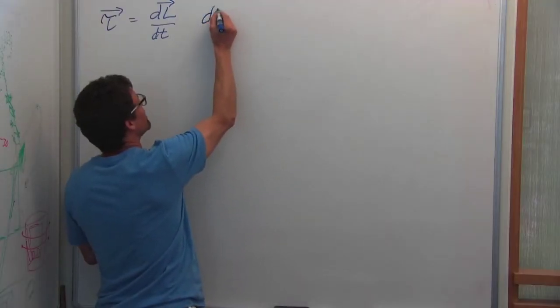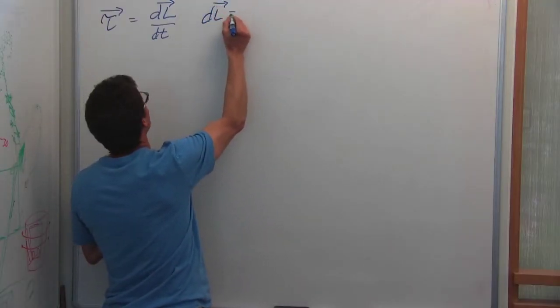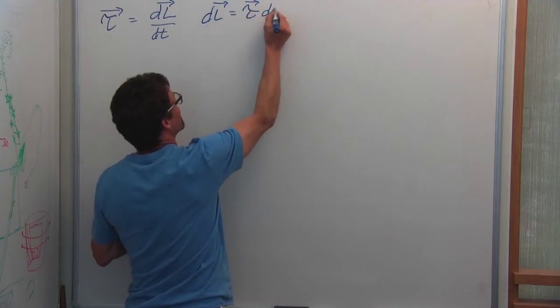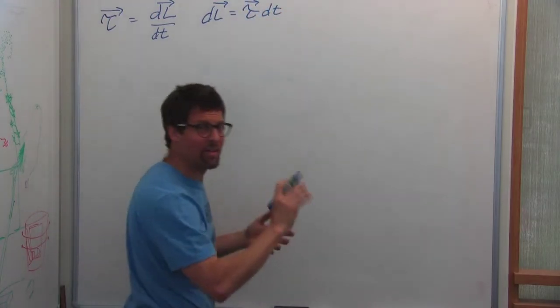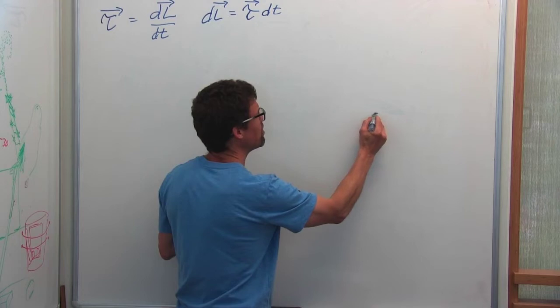That angular impulse, delta L, is equal to the torque times the amount of time that I'm applying that torque. So if a frisbee is stationary,